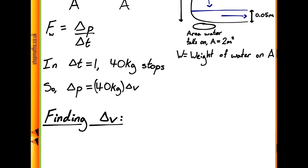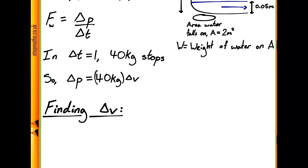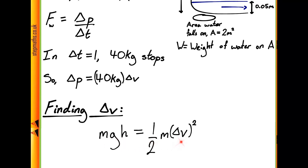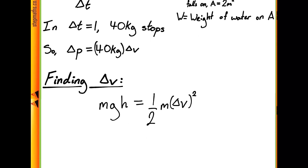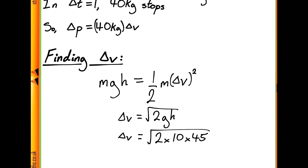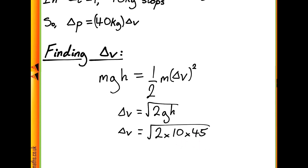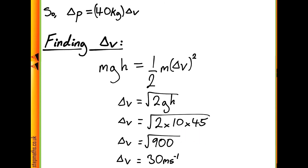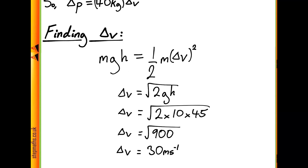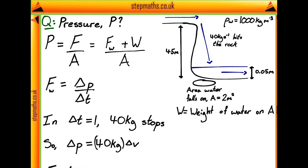One easy way of doing this is by conservation of energy. Initially the water has gravitational potential energy, and at the bottom it has kinetic energy instead with no gravitational potential energy. So we can equate these two things together and rearrange for delta V, where we'll see that the mass cancels. Substituting in g = 10 and height = 45 metres, we get delta V equals the square root of 900, which is 30 metres per second. So the water, as it goes over the waterfall, reaches a speed of 30 metres per second; therefore delta V is 30 metres per second.